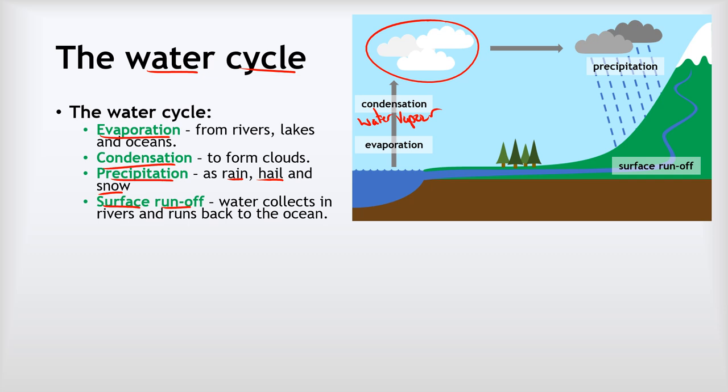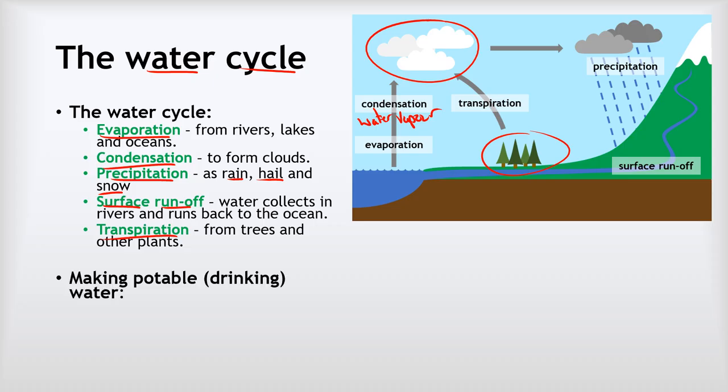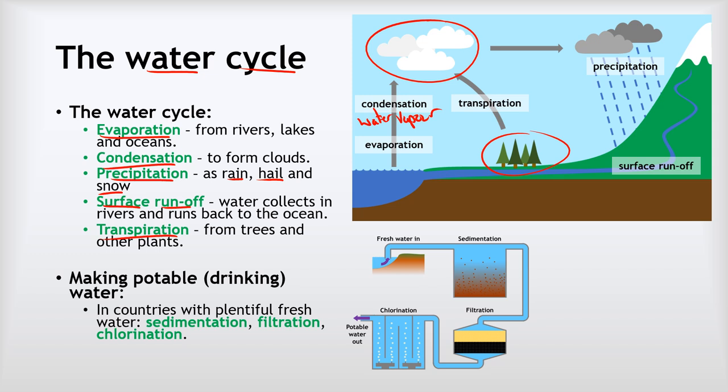Really importantly, plants play a very important role in the water cycle. We have transpiration, whereby the roots of the plants suck up the water and then it evaporates out of their leaves and up into the air. This is a major source of water vapor in the air, particularly when we get away from the coasts. So we've got those five stages: evaporation, condensation, precipitation, surface runoff, and transpiration. Now we're really lucky in this country to make potable water, which is drinking water. Because we've got so much water very readily available, we just follow this short three-step process of sedimentation, filtration, and chlorination. I won't go into this in detail, but you can check out the separating mixtures video in my chemistry playlist if you want more detail.